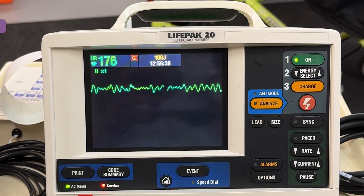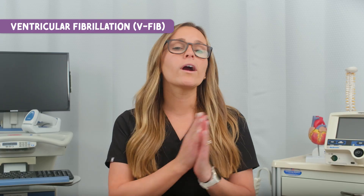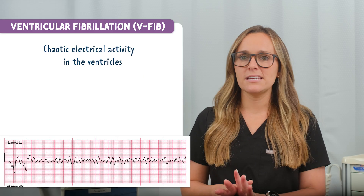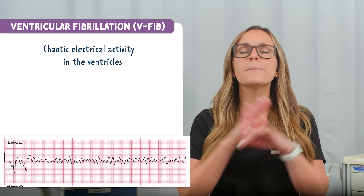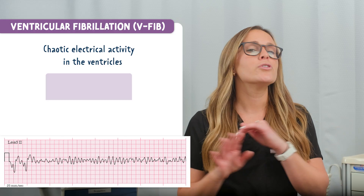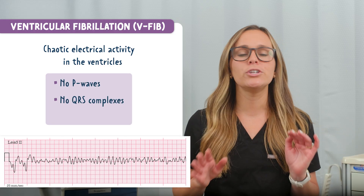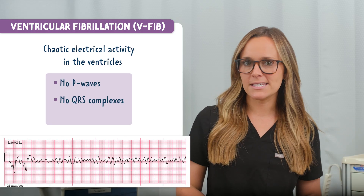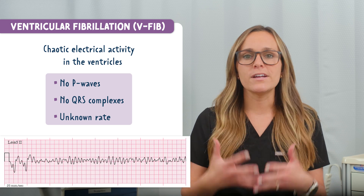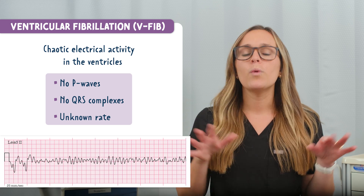This one is ventricular fibrillation or VFib. In VFib, the heart's electrical activity becomes completely chaotic. There's no organized rhythm, no P waves, and no QRS complexes. The rate is unknown because the ventricles are just twitching without pumping blood.